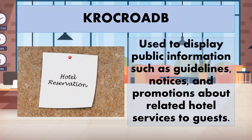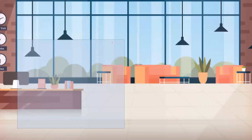Next — what is shown in this slide is the brown board area. This is used to display public information such as guidelines, notices, and promotions about hotel-related services to guests. Guidelines, notices, and upcoming events or promotions are posted here. This is called the cork board. It is also similar to the compartment boards in school where different departments have their own section — that is also called a bulletin board.